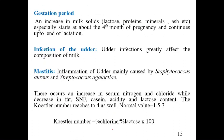During the gestation period, an increase in milk solids — including lactose, proteins, and mineral ash content — has been observed starting from the fourth month of pregnancy, and this continues until the end of lactation.